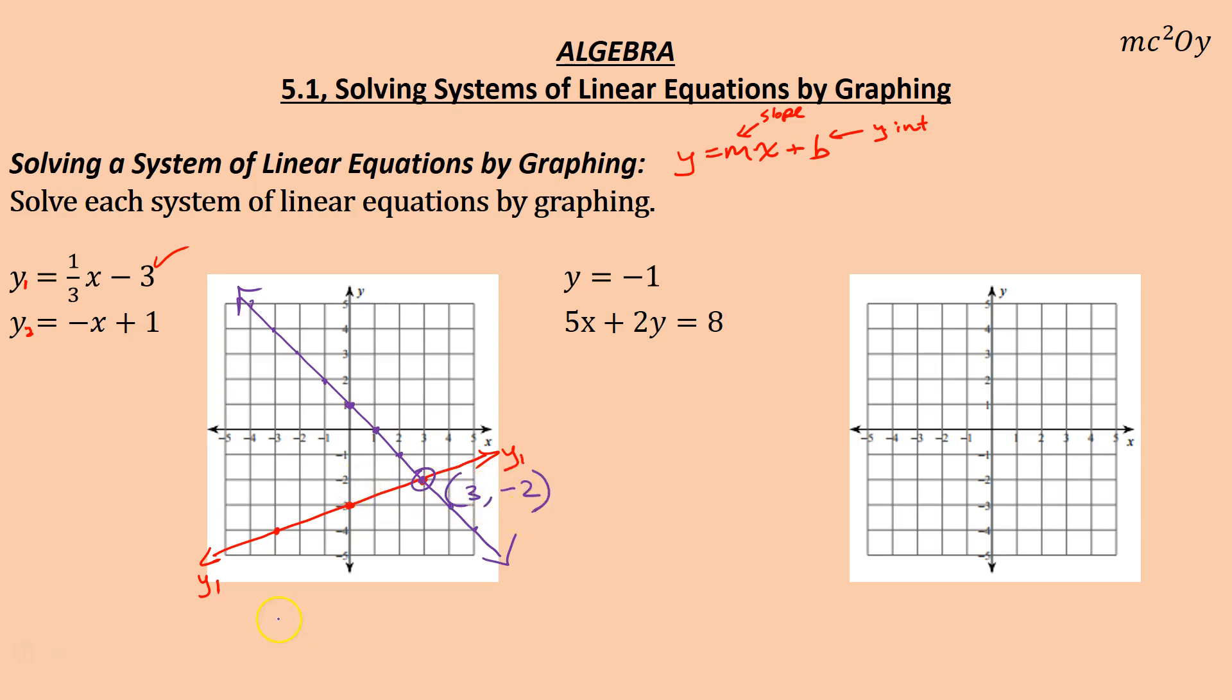My solution is right here at the ordered pair 3, negative 2. That means the solution is 3, negative 2. Which would mean if I plugged in or substituted 3 in for x. So 1 third of 3 is 1 minus 2, or minus 3 is negative 2. And if I substitute 3 in, negative 3 plus 1 is negative 2. It works out. 3, negative 2.